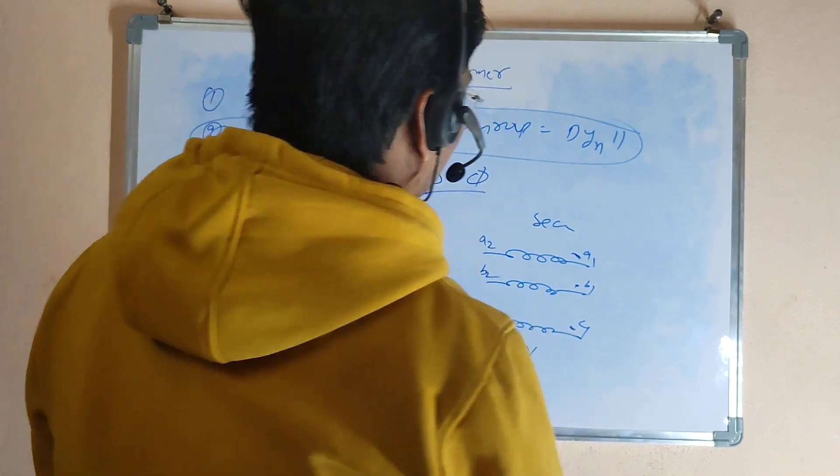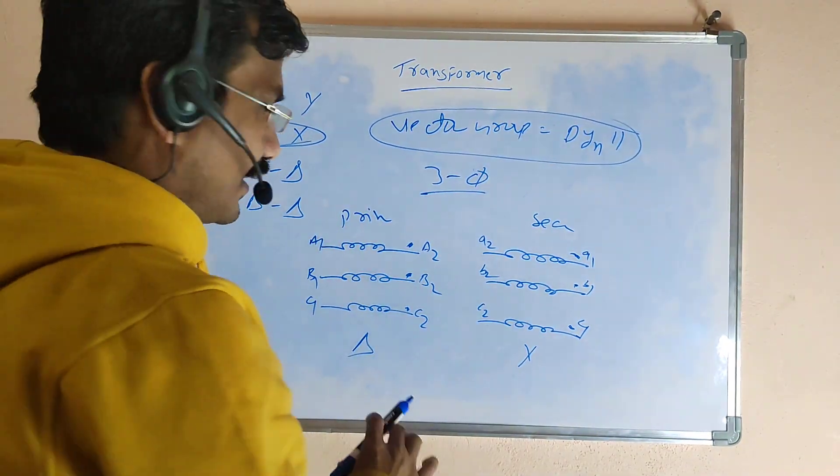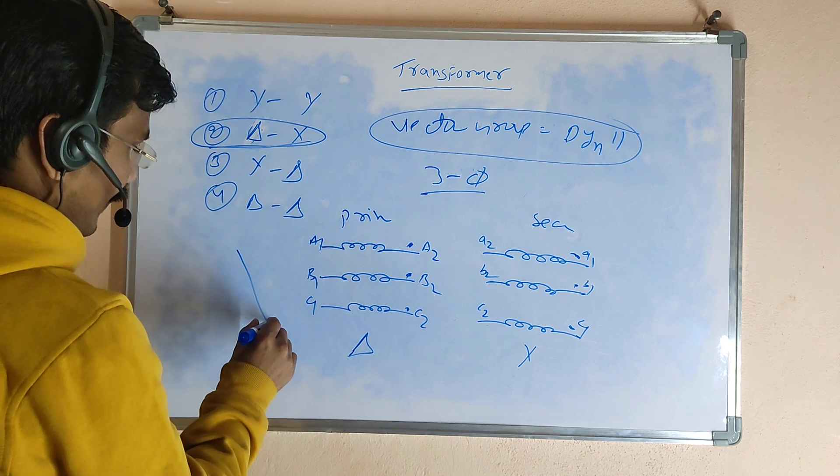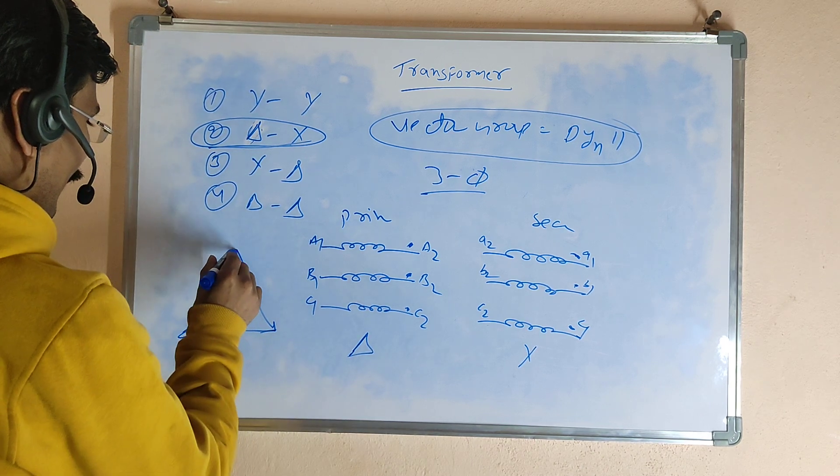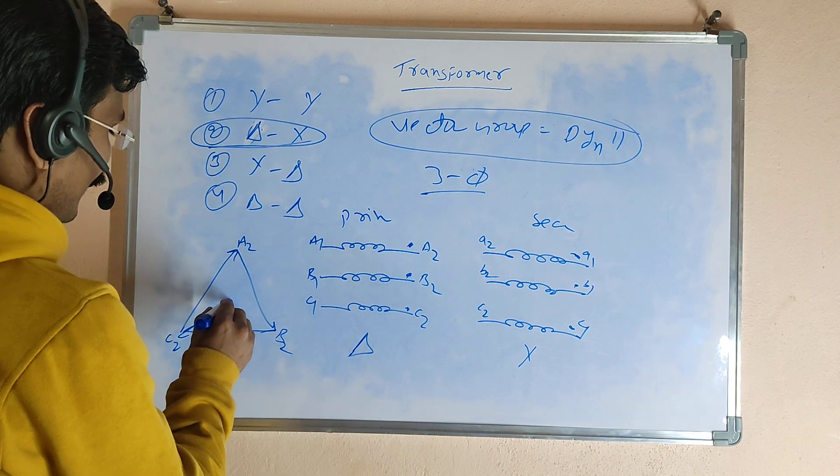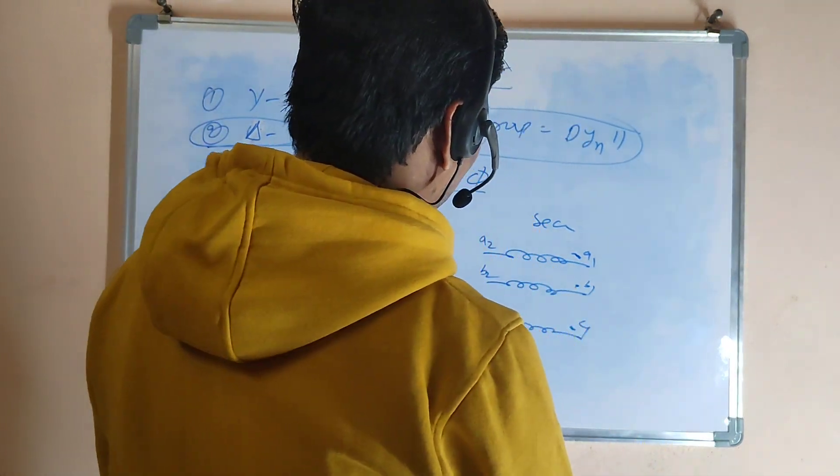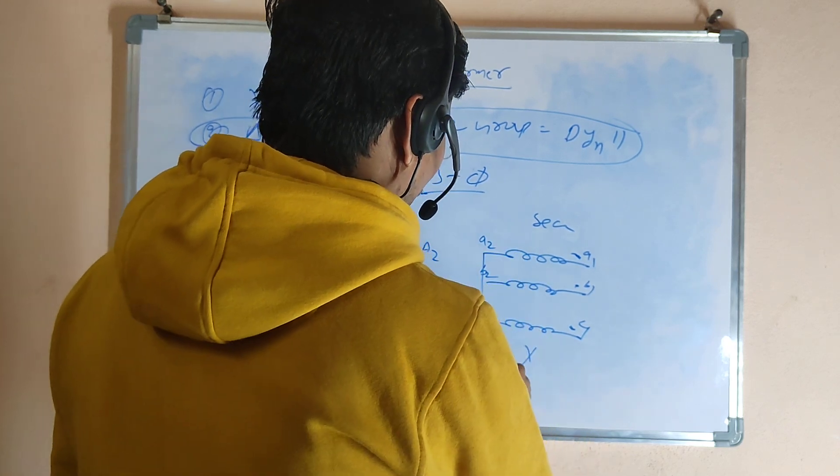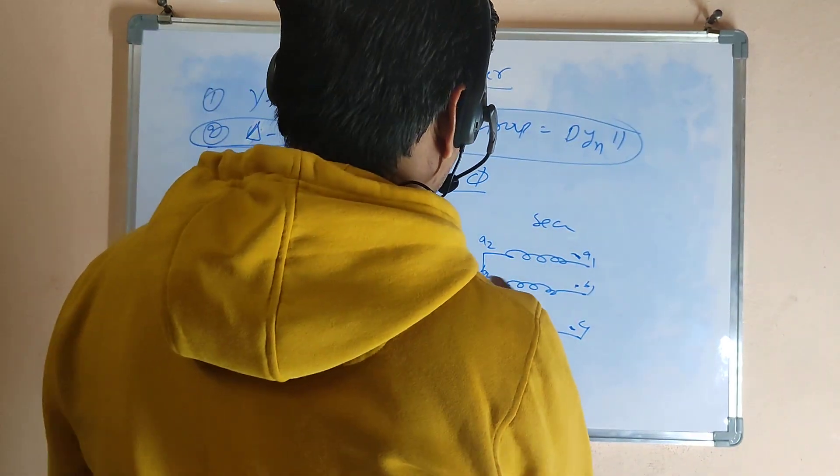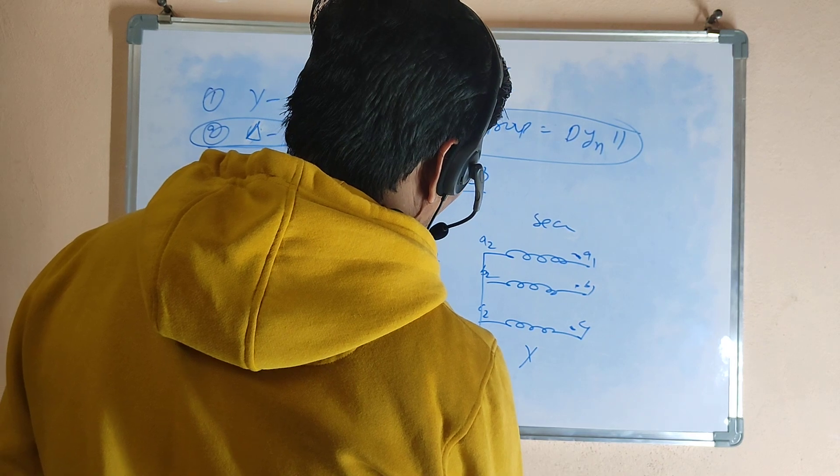This is delta in primary side, star in secondary side. Now I draw the vector diagrams. This vector diagram: this is called a2, this is called b2, this is called c2. This is the delta primary side. For the secondary side, the star has a neutral. This is called c2.